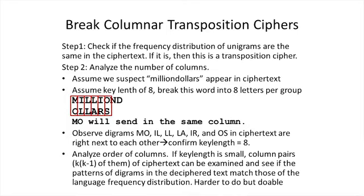Next, we examine the order of the columns. If the key length is small, we can analyze column pairs — there are k times (k minus 1) such pairs. If k is small, this is a manageable search. We examine the ciphertext to see if the digram patterns fall into one of those column-pair patterns. With some diligent work, we can figure out the column order and recover the plaintext.